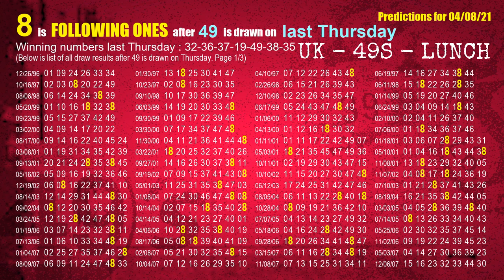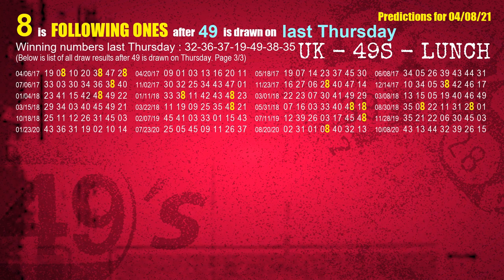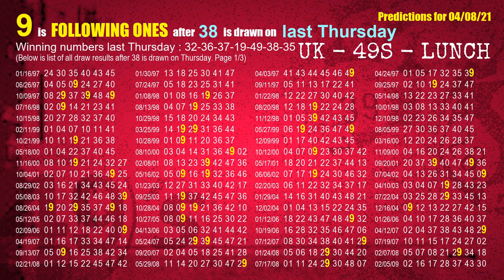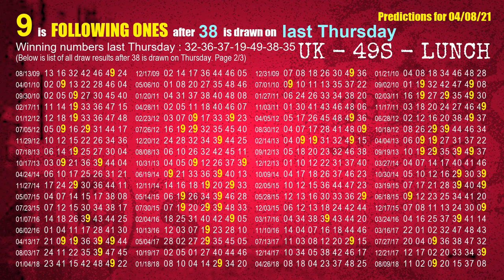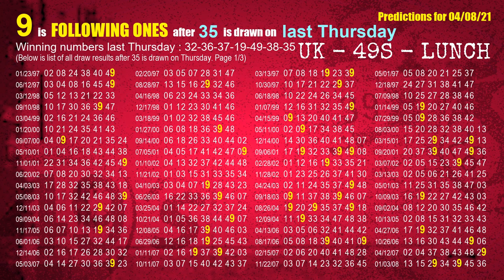The fifth winning number last Thursday is 49; the most frequently following units digit is 8. The sixth winning number last Thursday is 38; the most frequently following units digit is 9. The booster winning number last Thursday is 35; the most frequently following units digit is 9.